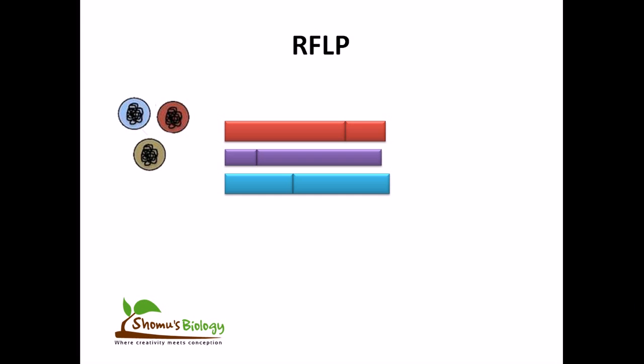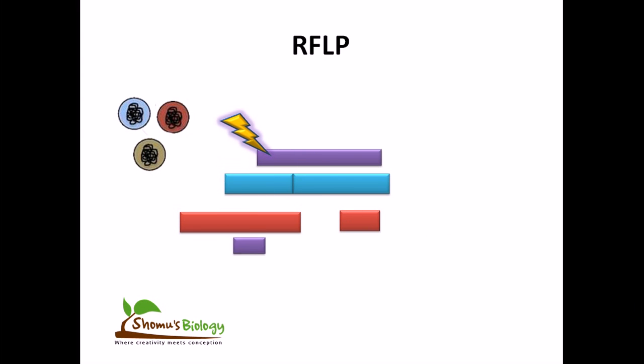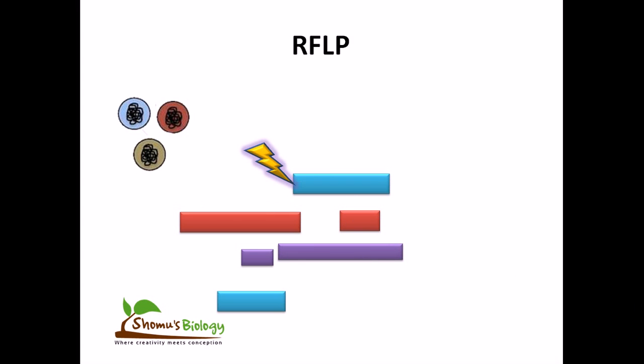When the genomic DNA is digested with one of these Restriction Enzymes, a series of fragments are produced of varying length. In the first case we generated these two fragments. In the second case we generated two different fragments. And in the third case we generated another two different kinds of fragments.